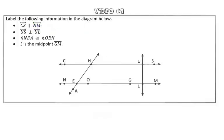So what we know is if two lines are parallel, they never intersect. So to show that in a diagram, we use these arrowheads on the lines. That will show that line CS is parallel to line NM.